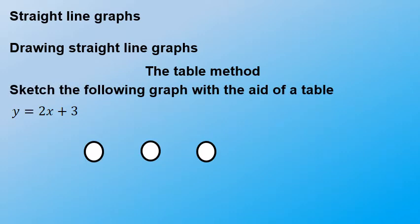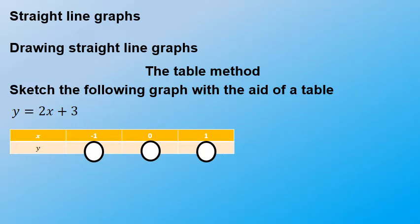If they've given you an equation y is equal to 2x plus 3 and they ask you to draw that straight line, you use a table. You choose some x-values — you're going to replace x with values like negative 1, 0, 1. We normally choose numbers around the origin so that we have our picture as close to the origin as possible. You can choose negative 2, negative 1, 0, 1, 2 — it doesn't matter.